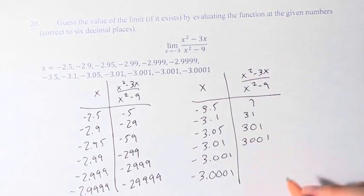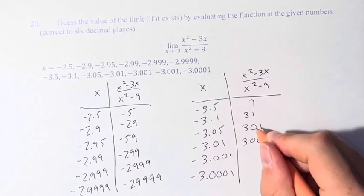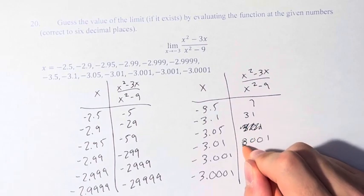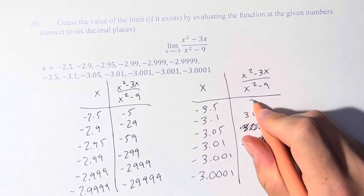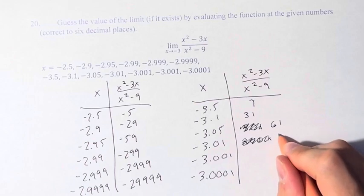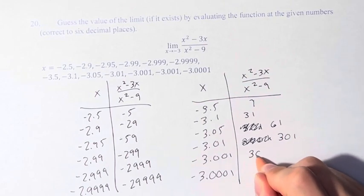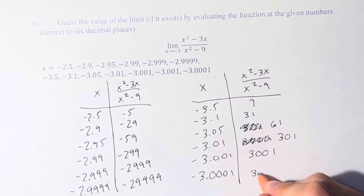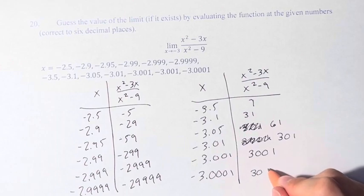3001, or sorry, I skipped one. This is 7, 31, 61, 301, 3001, and 3001.